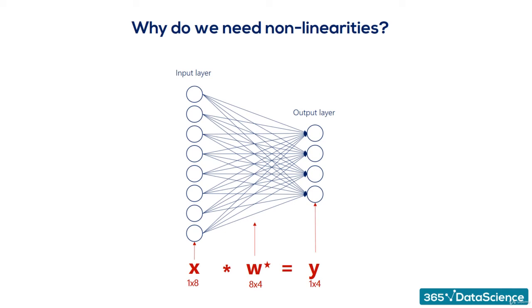The two consecutive linear transformations are equivalent to a single one. Even if we add 100 layers, the problem would be simplified to a single transformation. That is the reason we need nonlinearities. Without them, stacking layers one after the other is meaningless.